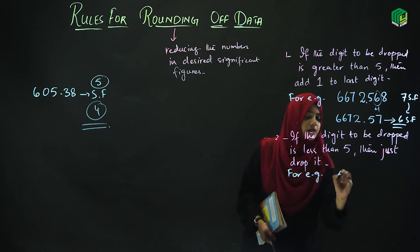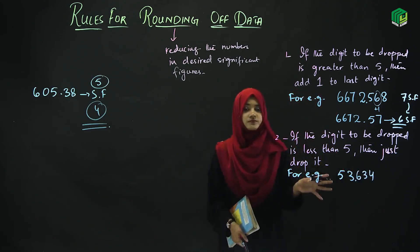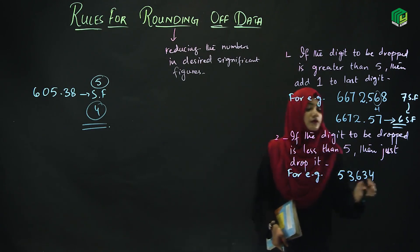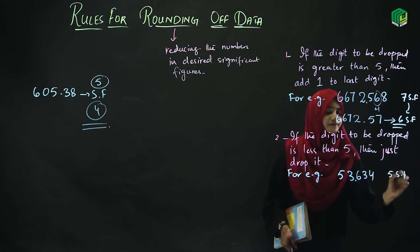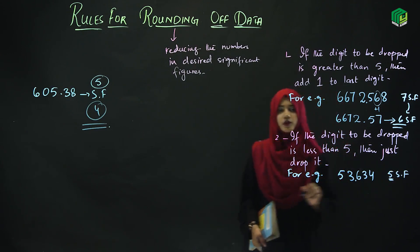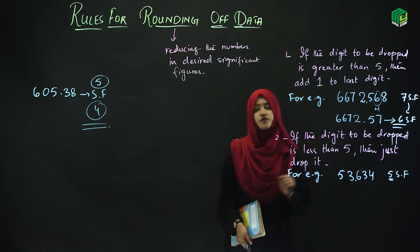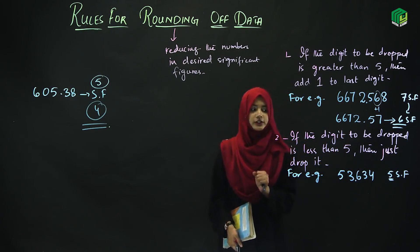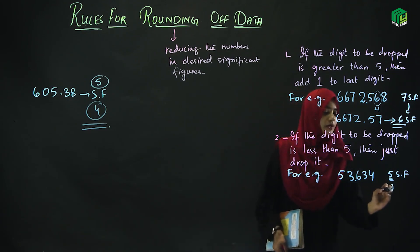Now let's take an example. If we have this value, how many significant figures are there? 5 significant figures. If you have to reduce it to 4 significant figures, so what do we do?